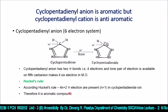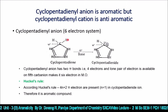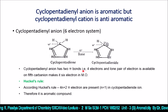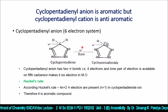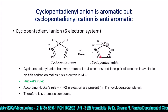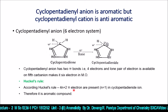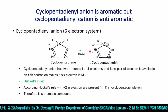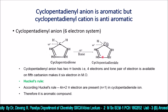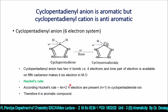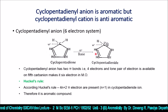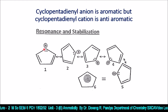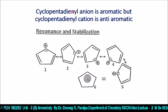Therefore the cyclopentadienyl anion is aromatic. It has a complete six π electron cloud (1, 2, 3, 4, 5, 6) and follows Hückel's 4n+2 rule. The sp3 hybridized carbon is converted to sp2, giving a planar structure with full conjugation. All aromatic characteristics — planarity, conjugation, and Hückel's rule — are satisfied.